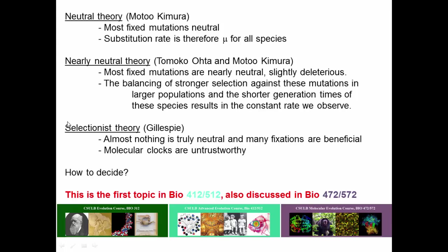There are three theories of molecular evolution. Kimura's neutral theory: most fixed mutations are neutral, substitution rate equals mu, roughly constant across species. Ohta's nearly neutral theory: most fixed mutations are slightly deleterious; the balance between stronger selection in larger populations and their shorter generation times produces the observed constant rate per time. A third view, championed by Gillespie, argues almost nothing is truly neutral — many apparent neutral fixations are actually beneficial — so molecular clocks are untrustworthy.